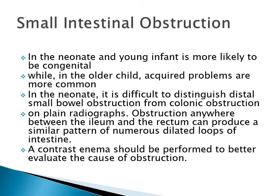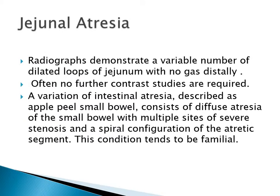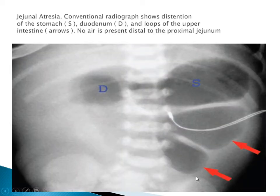Small intestine obstruction in the neonate and young infant is more likely to be congenital, while in the older child acquired problems are more common. In the neonate, it is difficult to distinguish distal small bowel obstruction from colonic obstruction on plain radiograph - obstruction anywhere between the ileum and the rectum can produce a similar pattern of numerous dilated loops. A contrast enema should be performed to better evaluate the cause. In ileal atresia, radiographs demonstrate dilated loops of duodenum with no gas distally.